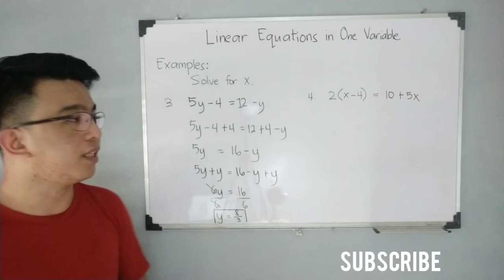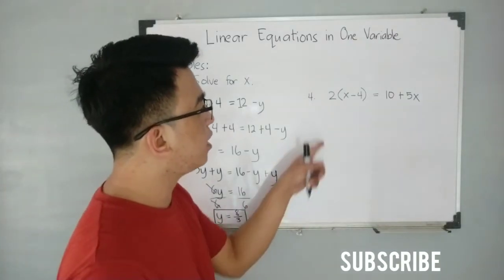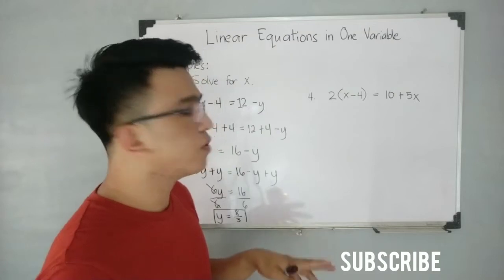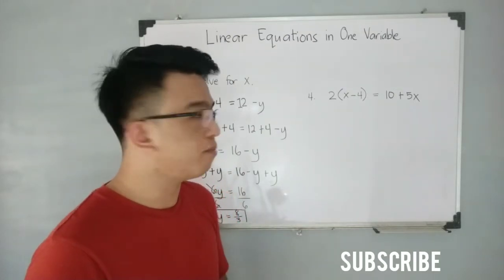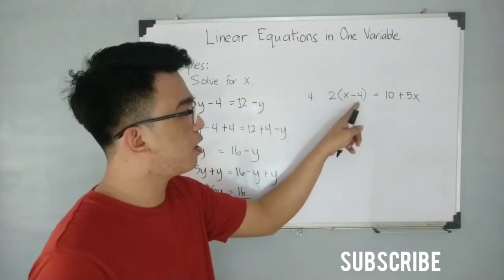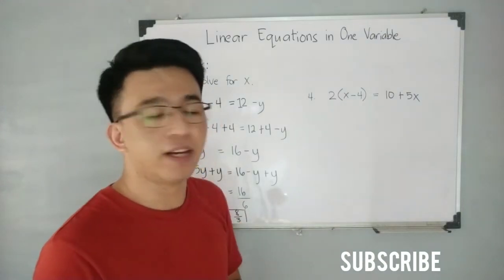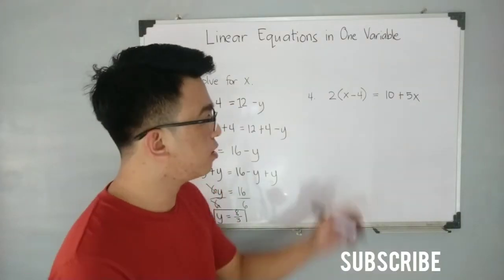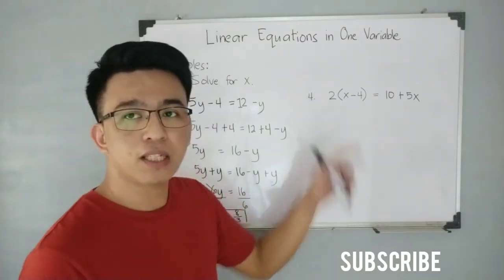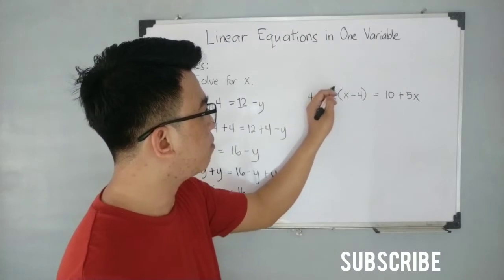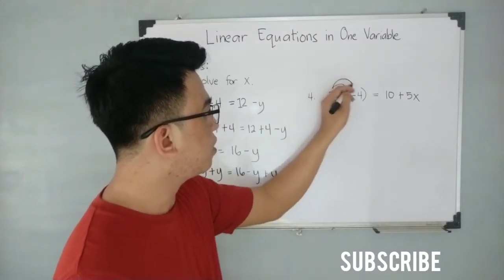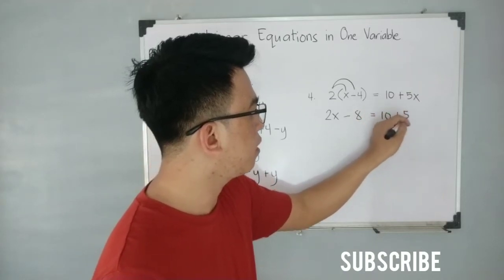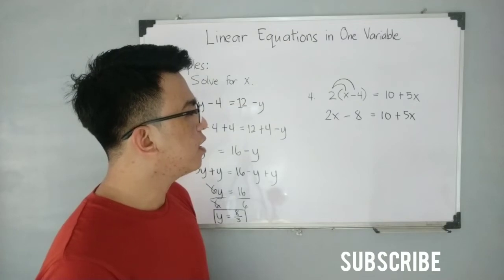Now let's move on to item number four. This one may look difficult but it is not. You have 2 times the quantity x minus 4 is equal to 10 plus 5x. Using the distributive property, this becomes 2 times x which is 2x, and 2 times negative 4 which is minus 8, so: 2x minus 8 is equal to 10 plus 5x.